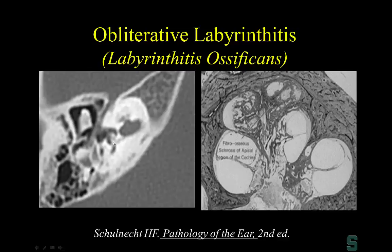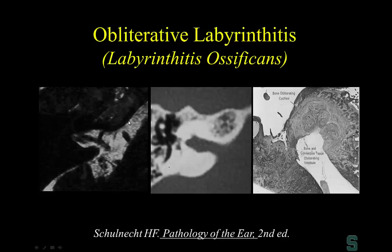The vestibule should have the same attenuation as the IAC, but it too can be replaced with increased attenuation in labyrinthitis ossificans. The most common location to look first is the basal turn of the cochlea. If untreated, it can involve the middle and apical turns as well. This is an example of very severe labyrinthitis ossificans with complete replacement of the cochlea and vestibule — no fluid visible on heavily T2-weighted images.